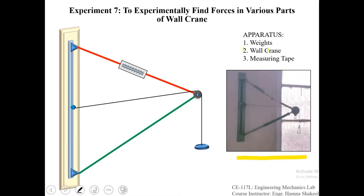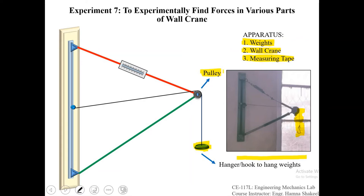For this experiment, we will be needing this wall crane, certain weights, and a measuring tape to measure the members of the wall crane. Here you have a hook, which is used to carry the loads. In the illustration, you can see a hanger that serves the same purpose — to carry the loads. Here you can also see a pulley, and we understand the mechanism of the pulley as we have discussed it in various earlier experiments.